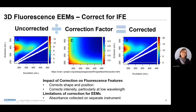To correct a 3D EAM, you collect the absorbance spectrum, calculate the entire IFE contour, divide the uncorrected EAM by the IFE contour, and then obtain corrected data. This seems like a very promising step, but what are the limitations? For standard EAMs, the absorbance correction is collected on a different instrument. Temperature changes, optical path differences, et cetera, can all impact what we'll call the goodness of the correction.